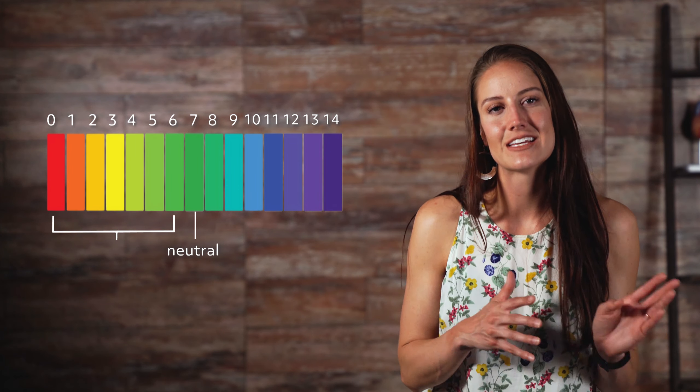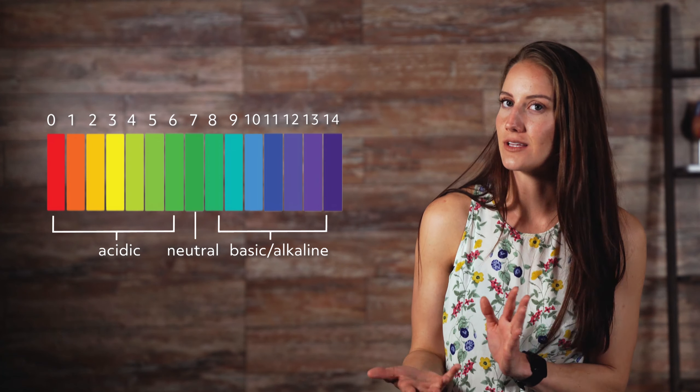Most solutions have a pH value between 0 and 14 on the pH scale. Solutions with a pH value of 7 at the middle of the pH scale are called neutral. If a solution has a pH value smaller than 7, it's called acidic. If the pH value is larger than 7, the solution is called basic or alkaline.